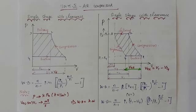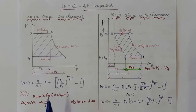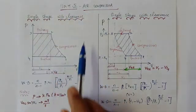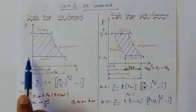Hi everyone. This is thermal engineering, second unit: reciprocating air compressor. For the air compressor, the first type is single stage and multi-stage. For the single stage, the second one is without clearance and the other one is with clearance. Working, formulas, and problems are solved in class. First, without clearance: the compressor without clearance has no clearance volume.